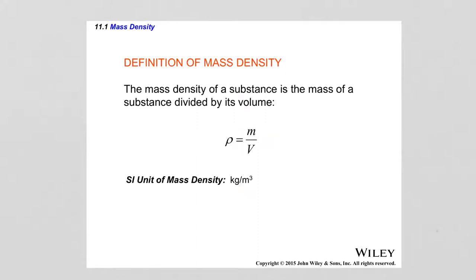When dealing with fluids, an important quantity that we need to know about is the mass density of a substance. The mass density of a substance is defined as the mass of that substance divided by the volume of the substance. In metric units, the mass density of a substance is measured in kilograms per cubic meter.